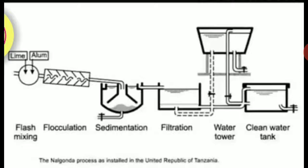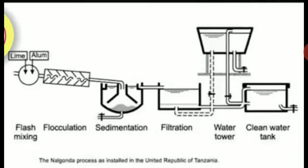The Nalgonda process is shown on the screen as a process chart. First, raw water with excess fluoride content enters a chamber where lime and alum are added. The water then moves into a flocculation chamber where proper mixing occurs. Due to flocculation, the water with excess fluoride passes into the sedimentation tank.